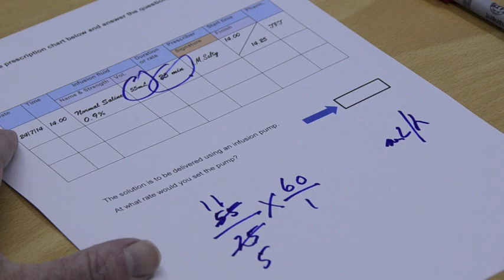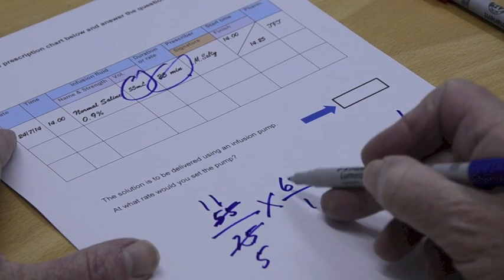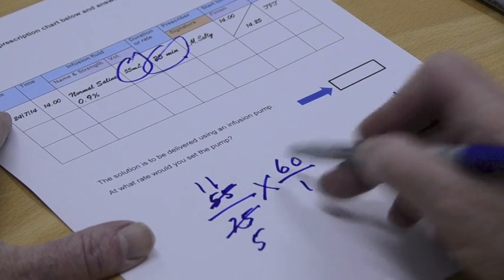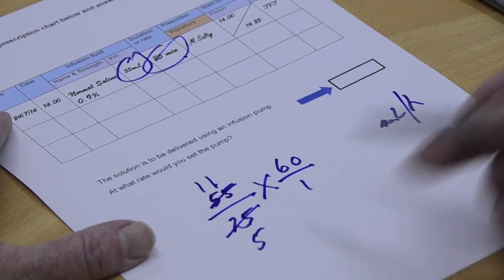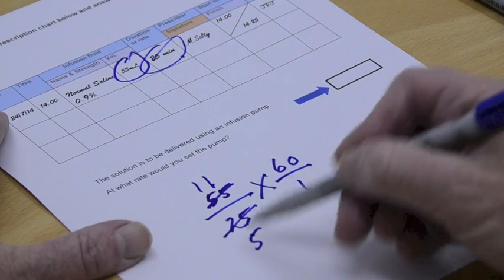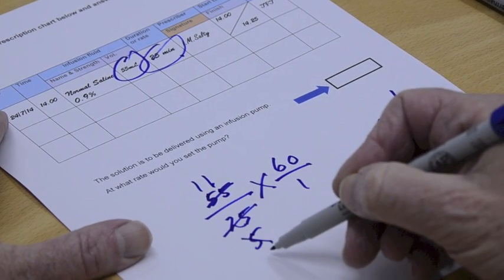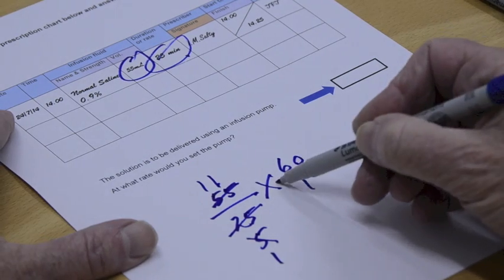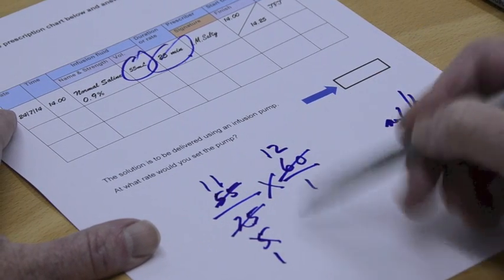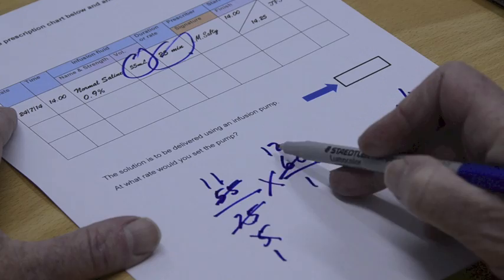Again, don't forget, I mean okay, yes you can multiply that out, there's nothing wrong with that at all, and multiply the bottom out as well. Or you can spot that, say 5 goes into 5 obviously 1, but also into 60 it will go 12. Just make your calculation easier and all you've got to do is 11 times 12.